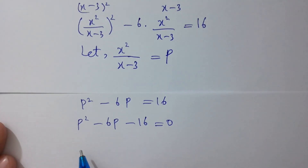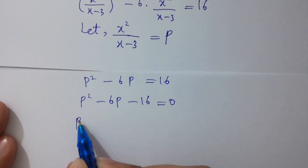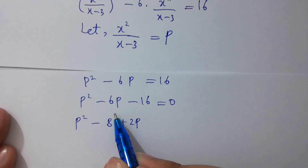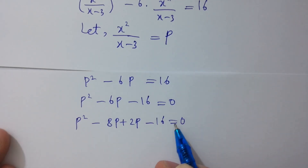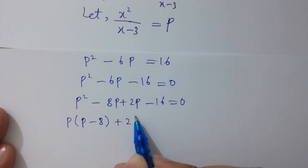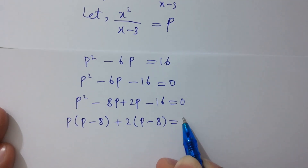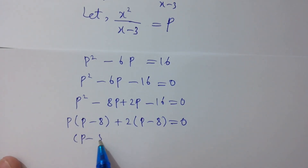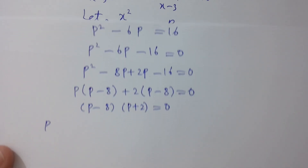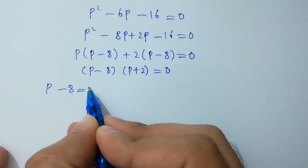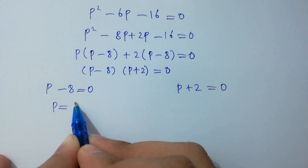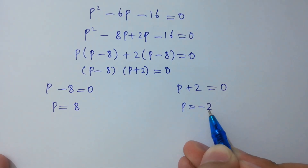Now let's factorize it. p² minus 8p plus 2p minus 16 equals 0. We get p(p - 8) plus 2(p - 8) equals 0, so (p - 8)(p + 2) equals 0. Either p minus 8 equals 0 or p plus 2 equals 0, giving p equals 8 and p equals minus 2.